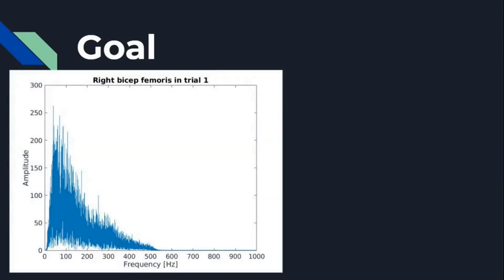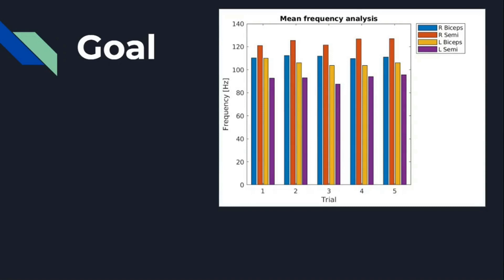The goal of this video is to make this FFT plot — x-axis is frequency and y-axis is amplitude. Like I showed in my previous video, I did amplitude analysis where x-axis was time, but this time x-axis is frequency in hertz. After that I'll show you how to do mean frequency analysis based on this FFT plot.